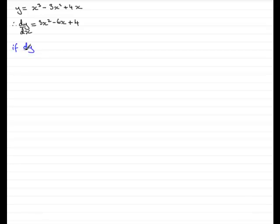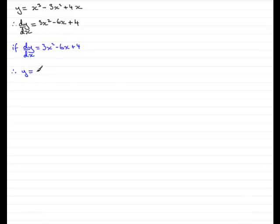Now, when we talk about integration, it is essentially the inverse of differentiation. In other words, if I had dy by dx equal to 3x squared minus 6x plus 4, as we have up here, then if I integrate this — do the inverse of it — then y would equal x cubed minus 3x squared plus 4x. Because if we differentiate this, we get this as a result. So when we're integrating, we're undoing this, trying to find out what we originally differentiated.